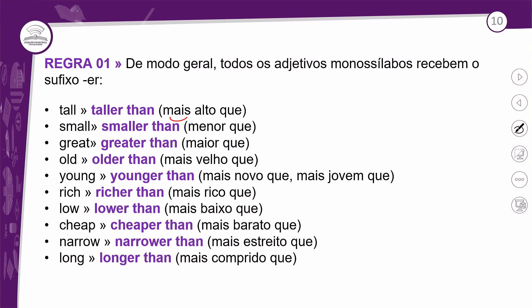Exemplos da regra 1: TALL → TALLER THAN (mais alto que), SMALL → SMALLER THAN (menor que), GREAT → GREATER THAN (maior que), OLD → OLDER THAN (mais velho que), YOUNG → YOUNGER THAN (mais novo/jovem que), RICH → RICHER THAN (mais rico que), LOW → LOWER THAN (mais baixo que), CHEAP → CHEAPER THAN (mais barato que), NARROW → NARROWER THAN (mais estreito que), LONG → LONGER THAN (mais comprido que). Você só acrescenta o ER ao fim do adjetivo — muito simples.